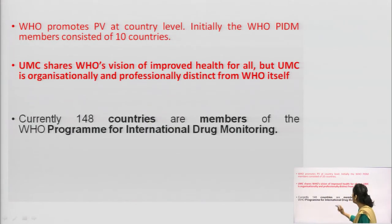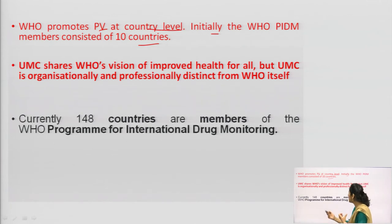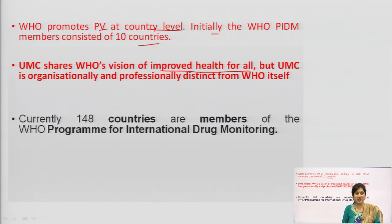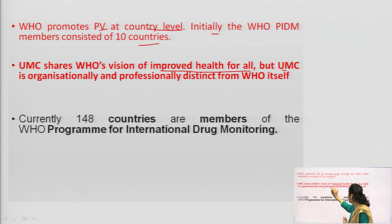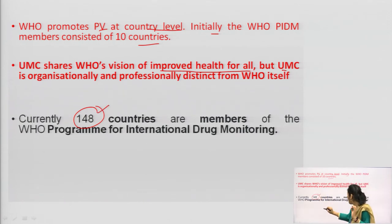WHO is promoting pharmacovigilance at the country level — every country should have a pharmacovigilance system. The EMP, Essential Medicine and Health Products division of the Health System and Innovation Cluster, is responsible for pharmacovigilance activities. When the program started, it initially consisted of 10 countries. UMC shares the WHO vision of improved health for all — medicines taken should be safe. UMC is organizationally and professionally distinct from WHO itself; both are different entities. Currently, 148 countries are members of the WHO Program for International Drug Monitoring.